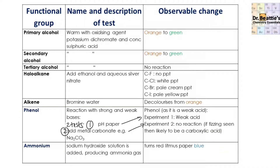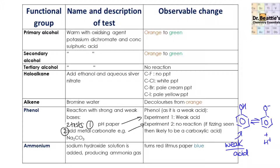Now we turn to some second-year functional group tests. The first is phenol. Phenol is a weak acid, forming the phenoxide ion and H+. The first test is that with pH paper you'll get a colour indicative of a weak acid — a yellowy-orange. You could also use a pH probe. However, carboxylic acids are also weak acids, so to differentiate between a carboxylic acid and a phenol: if you add a metal carbonate, it will not react with phenol but it would react with a carboxylic acid.